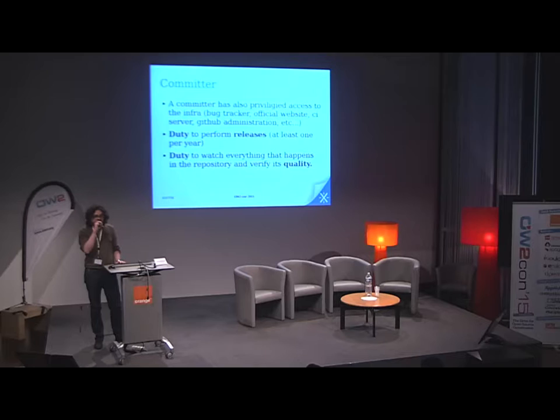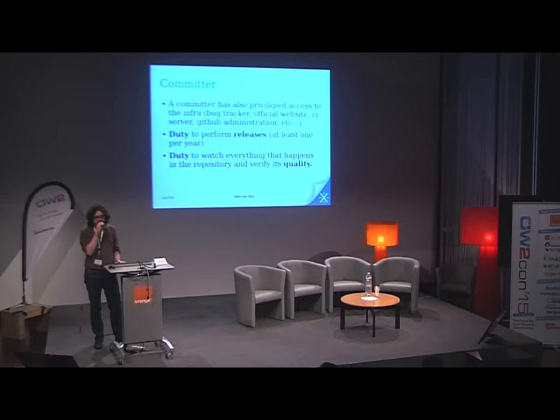An important thing is that each committer has a veto right — any committer can block a proposal, even if the proposal comes from my company. They need to have good reasons, but each committer has their veto right. A committer also has privileged access to the infrastructure: the bug tracker, the official website, the CI server, GitHub administration, and so on. They also have a duty to perform releases — at least one per year, because it takes time and everyone should contribute to the effort.